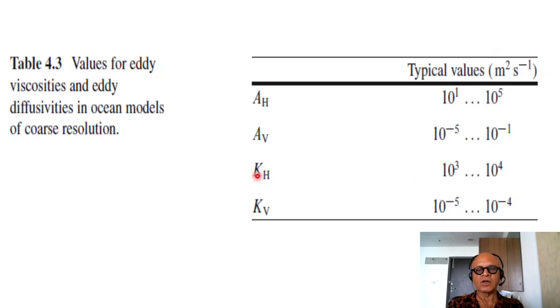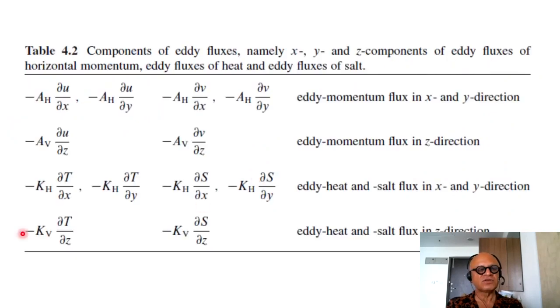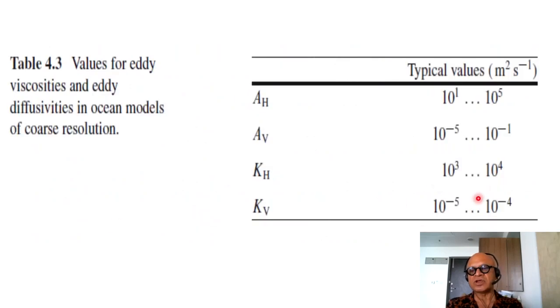This is for horizontal and vertical diffusivities for heat and salt: 10^3 to 10^4, 10^-5 to 10^-4. So the ranges, the vertical here for temperature and salinity, are smaller or better constrained, let's say.